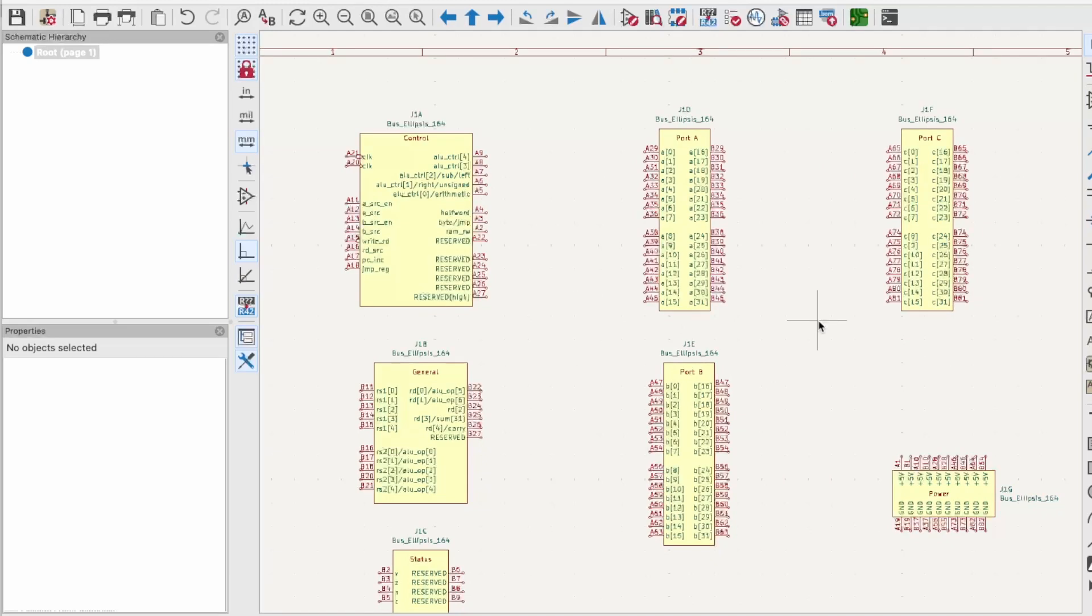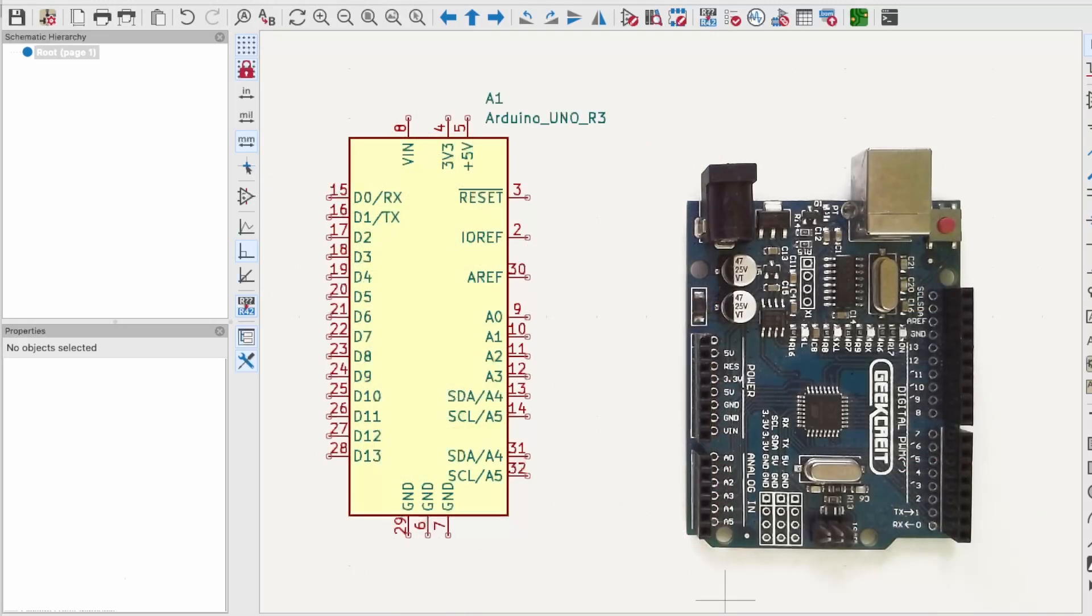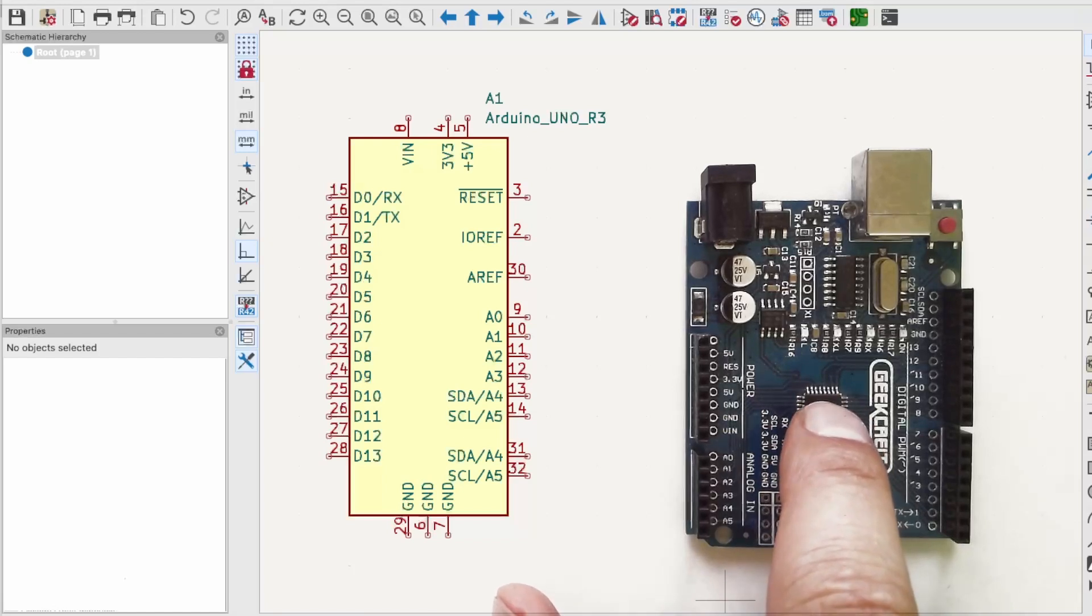To control the I/O through the PCI Express connector I'll use an Arduino UNO. The UNO has a symbol that's already in KiCad so I'll add that now as well. The Arduino UNO is based on the ATmega328, which is the microcontroller chip in the middle here, and that has three ports exposed.